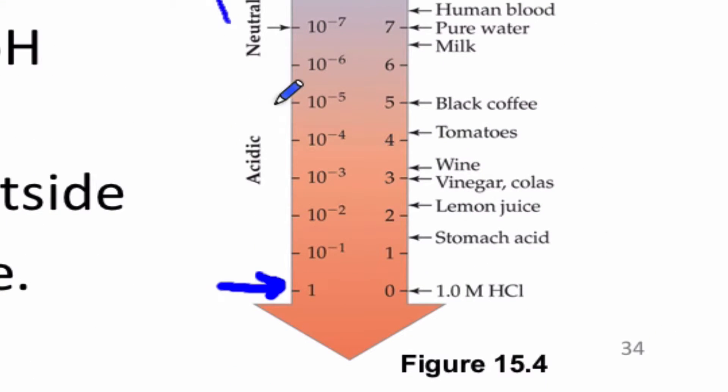On the other side of the scale, where the hydronium concentration is greater than 10 to the negative 7, we have the acidic solutions. Some examples are 1 molar HCl, which has a pH of 0. Stomach acid, which is about 1.5. Lemon juice. Wine is about 3.25. Tomatoes, about 4.25.